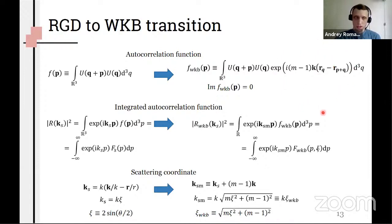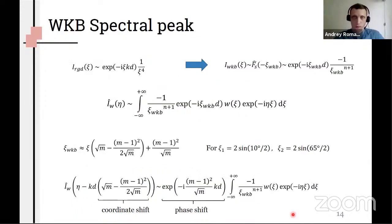For example, autocorrelation function has this additive which slightly modifies the integral, but it still has a finite support. Integrated autocorrelation function and its connection with the intensity also has the same form but ks vector replaced by ksm vector. Here you can see the definition - it can be considered as a change in coordinates. In that way, also here we can make the same analysis as done before and estimate the peak shape.